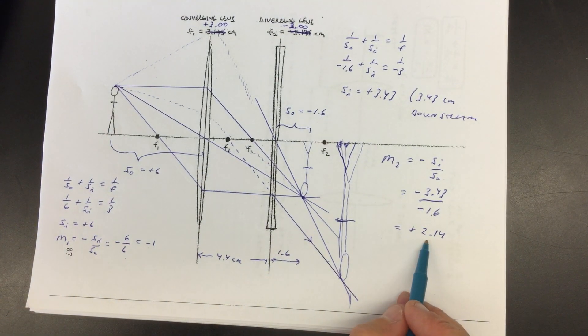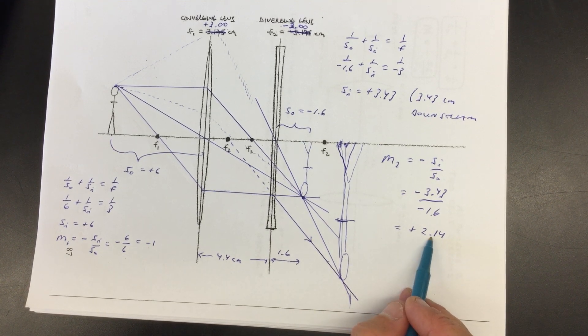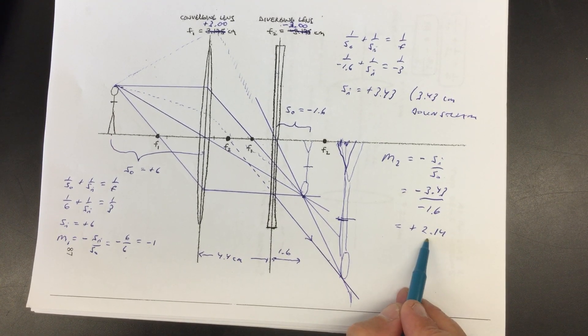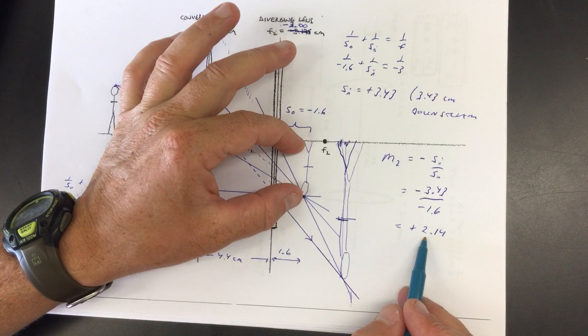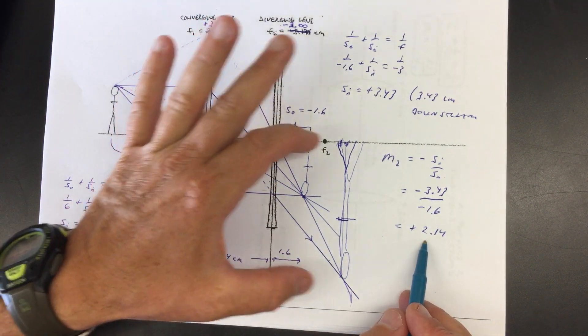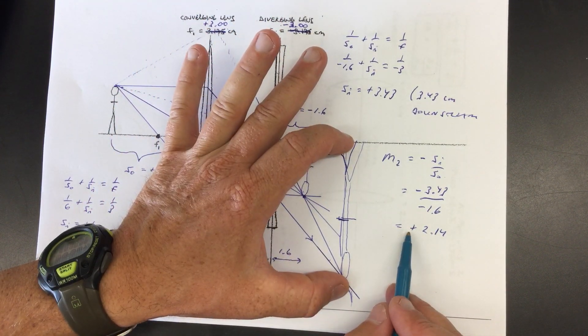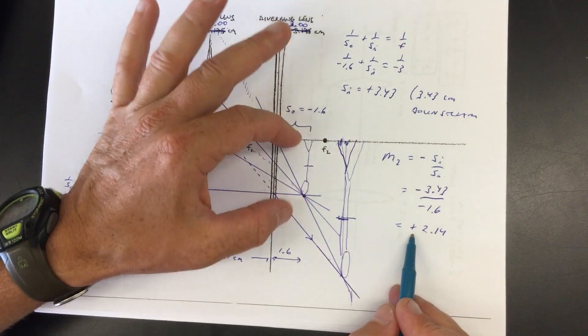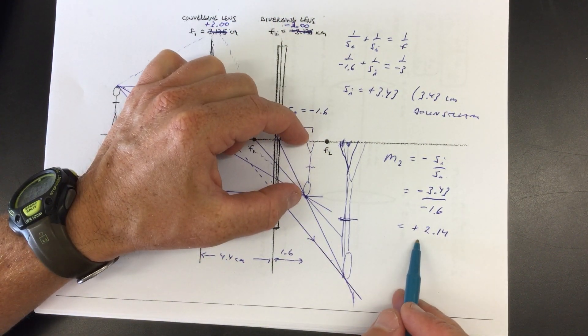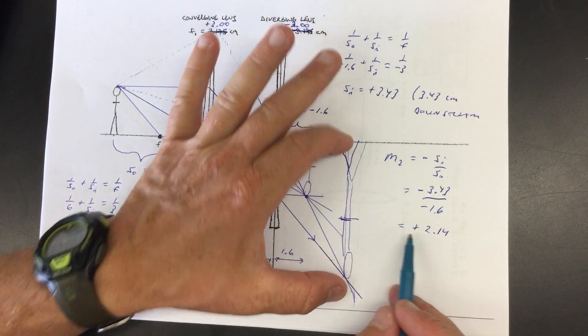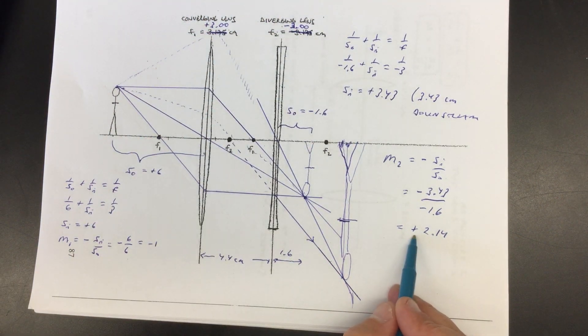Right. Now what this means is 2.14. That's the factor by which lens two, you know, changed its object. Well, the object for lens two was this. So if you blow this up by 2.14, you get this, right? Notice this is positive. So that means that we didn't flip the input of lens two. We gave lens two an upside down thing and we still got an upside down thing. So that's why this ends up being positive.